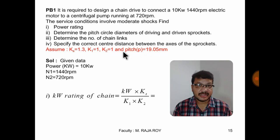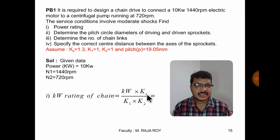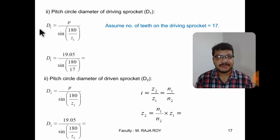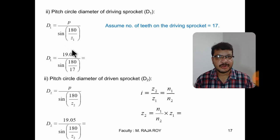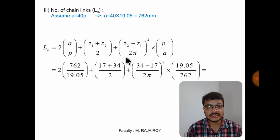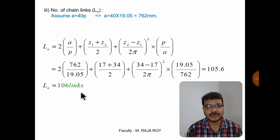From the given data, you can easily calculate the power rating since power, Ks, K1, and K2 are all given. Power rating equals 13 kW. To calculate the pitch circle diameter of the driving sprocket, you need the number of teeth on the driving sprocket Z1. When Z1 is not given, assume Z1 = 17. Then D1 = p / sin(180/z). Since N1, N2, and Z1 are known, you can find Z2 and then D2. For the number of links, when center to center distance is not known, assume it as 40 times the pitch — giving approximately 105, rounded to 106 links. Once ln is known, find the correct center distance A.